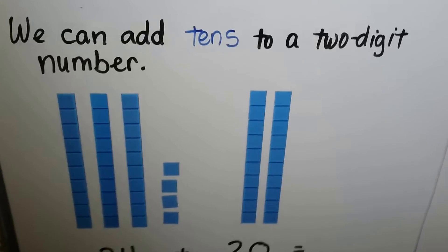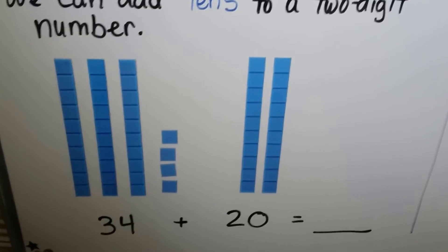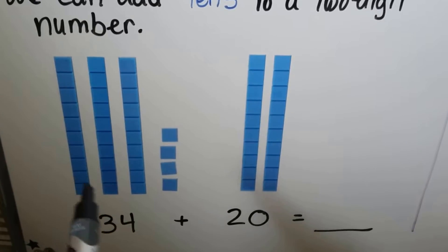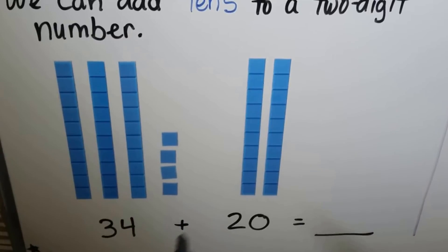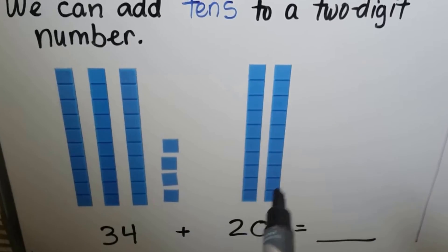We can add 10s to a two-digit number. Here we have 34 again. We have three 10s and four 1s. We want to add 20. That's two 10s.